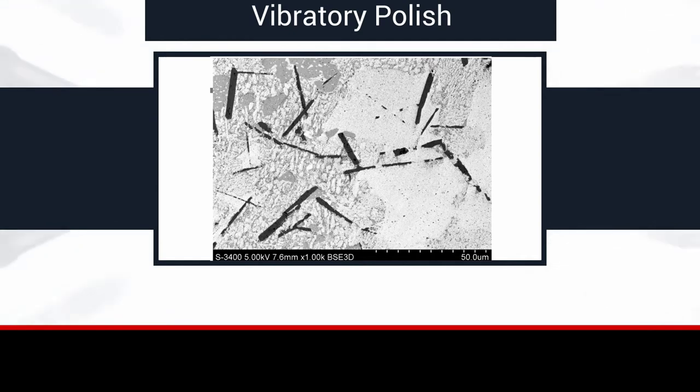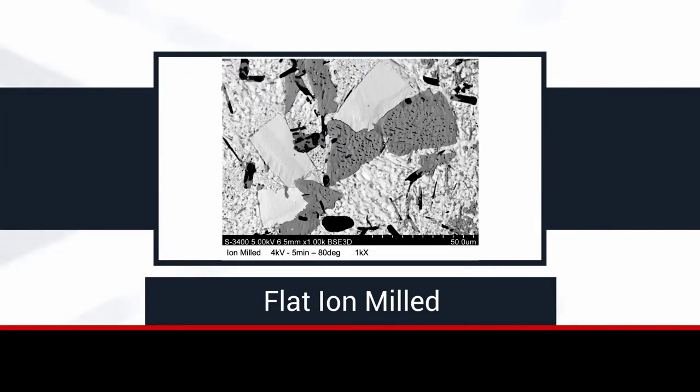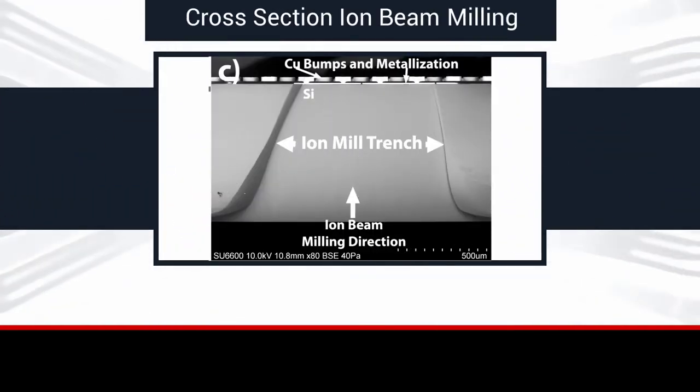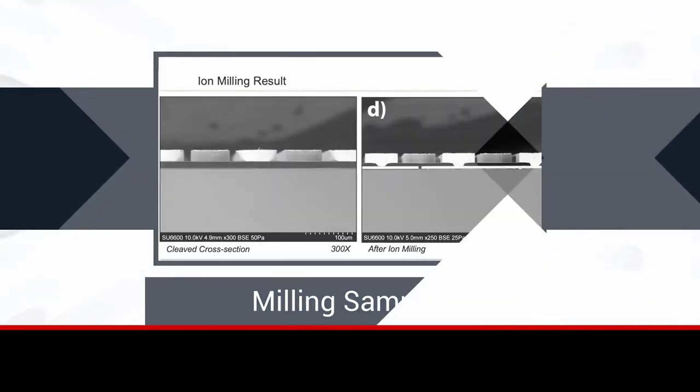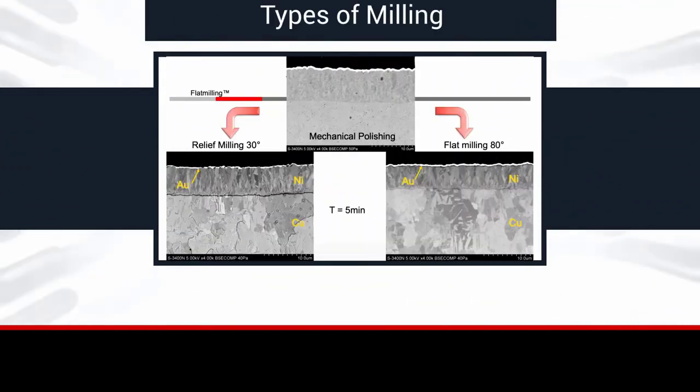In traditional preparation practices, machine grinding can leave flaws and distortions in the sample. Through the use of ion beam processing as a touch-free method for material removal, the ArBlade 5000 is able to produce a mirror-like surface on the sample, thus revealing a true representation of the sample itself.